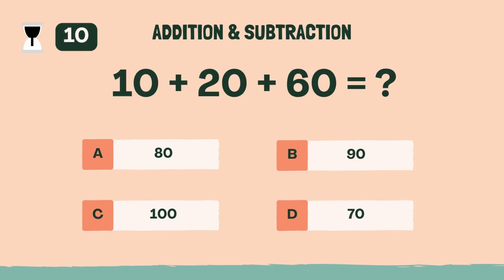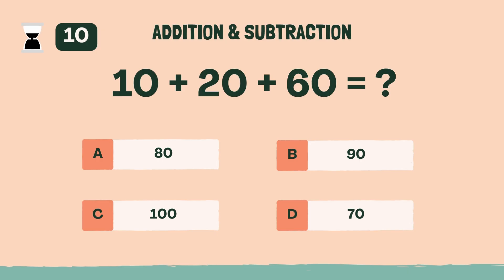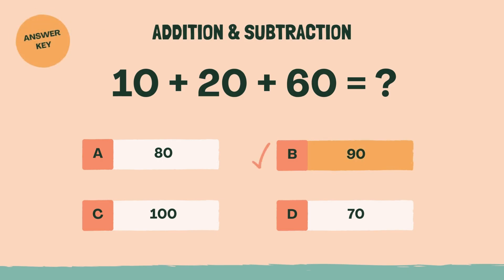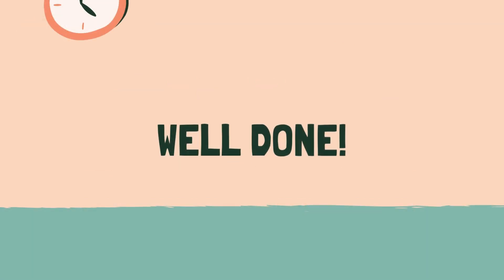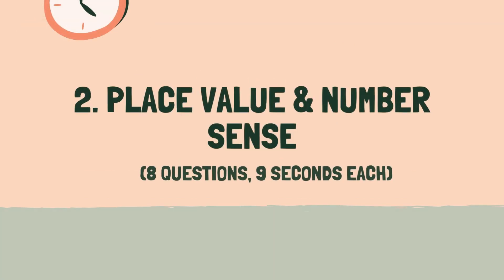What is 10 plus 20 plus 60? B, 90. Well done. Let's move on to the next category.